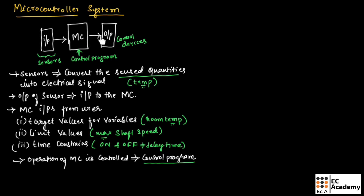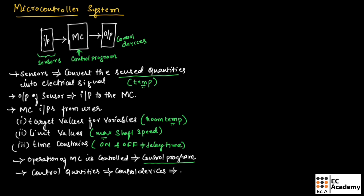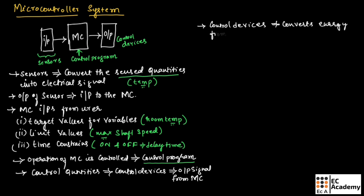Whatever output signal a microcontroller produces, the control devices will produce the control quantities depending upon those output signals. The control quantities are produced by control devices in response to the output signal from the microcontroller.